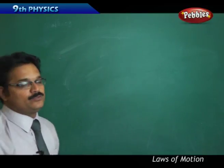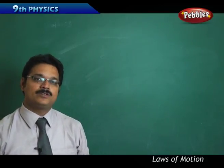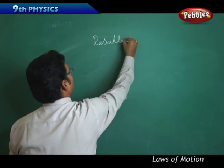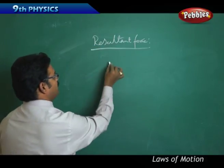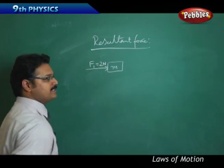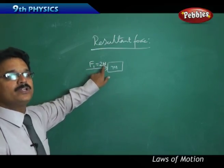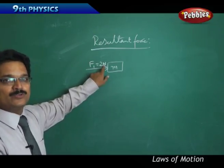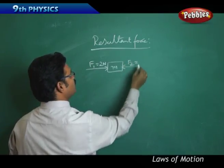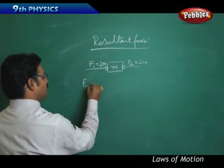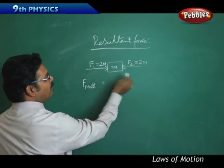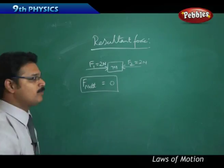We have learned about balancing and unbalanced forces. Now let's move on to some numericals based on resultant force. Take a block of mass M with force F1 equal to two Newtons acting in one direction and force F2 equal to two Newtons acting in the opposite direction. Note: the SI unit of force is Newton, named after Newton who first described force. Since both forces are equal and opposite, F net equals zero, so there is no effect on the body.